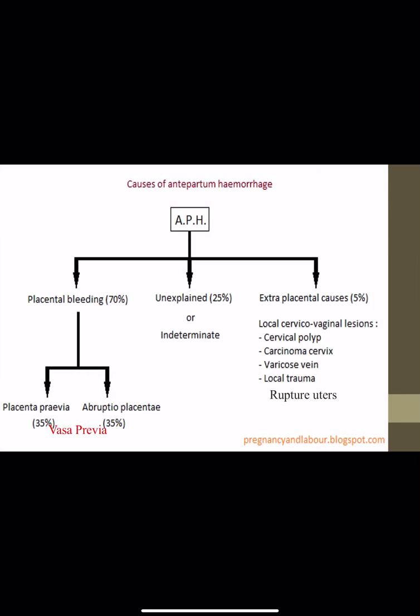The major causes of antepartum hemorrhage can be divided into placental causes, unexplained, and extraplacental causes. The placental causes represent 70% of cases and include placenta previa, abruptio placenta, and vasa previa. The unexplained represent 25% with no reason found. Extraplacental causes include rupture uterus and local lesions in the cervix or vagina like cervical polyp, carcinoma of the cervix, varicose vein, and local trauma.